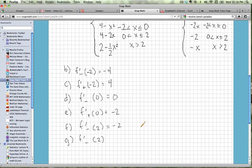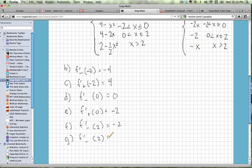And if we are coming up on 2 from the right, we are dealing with this piece right here. Evaluate this at 2 and we will get negative 2.